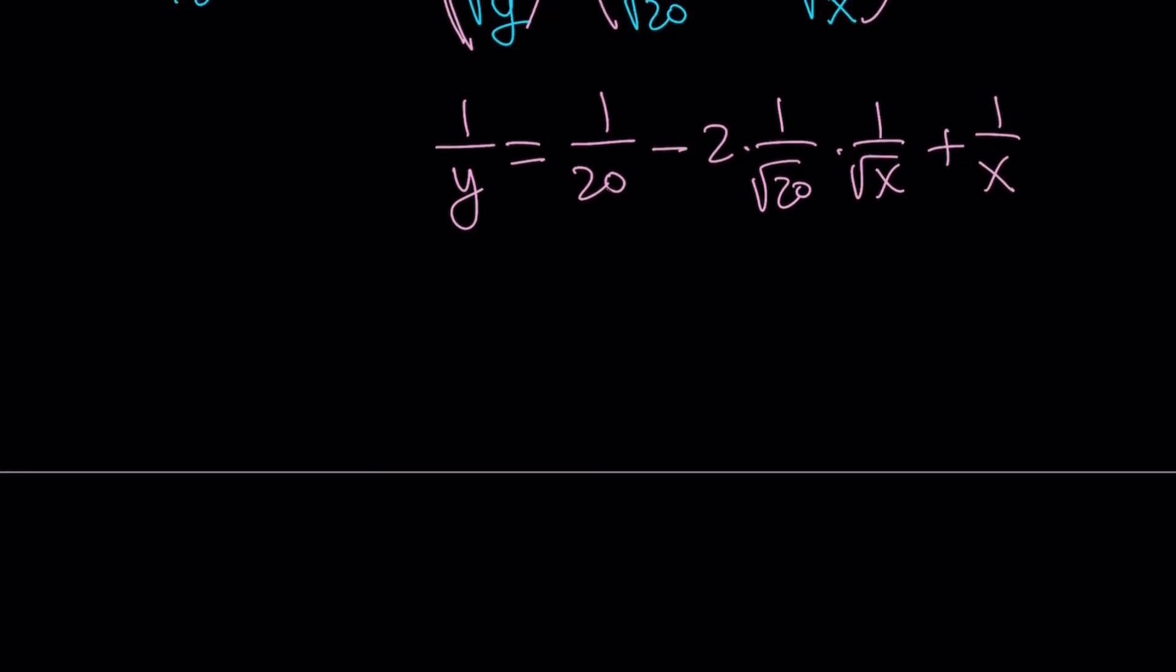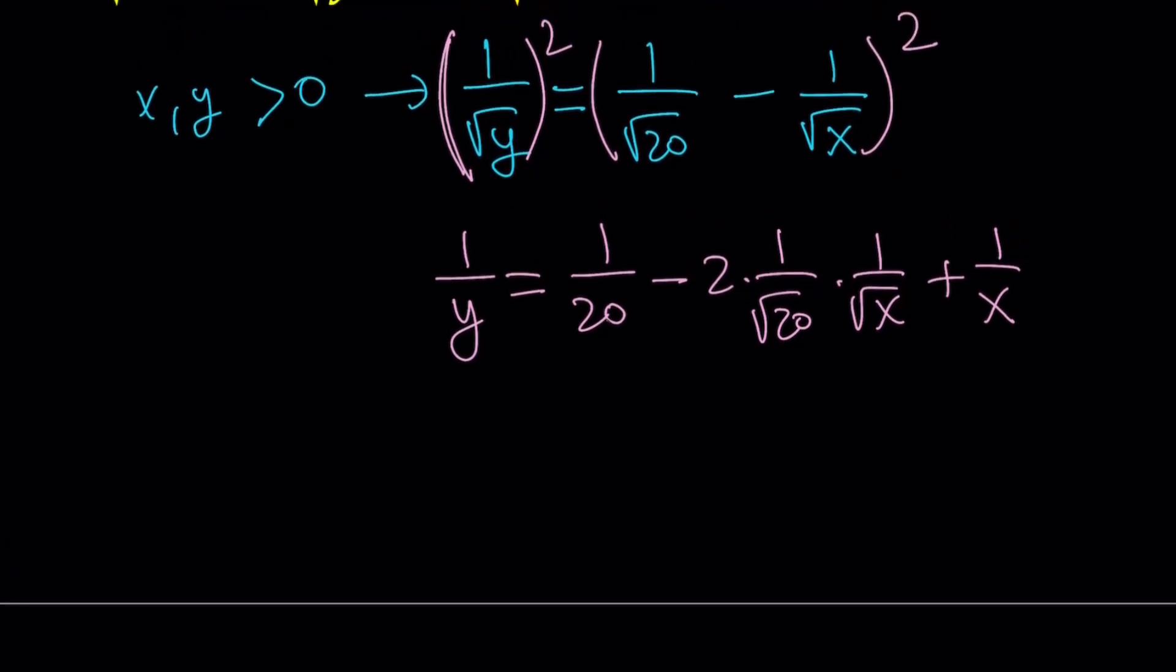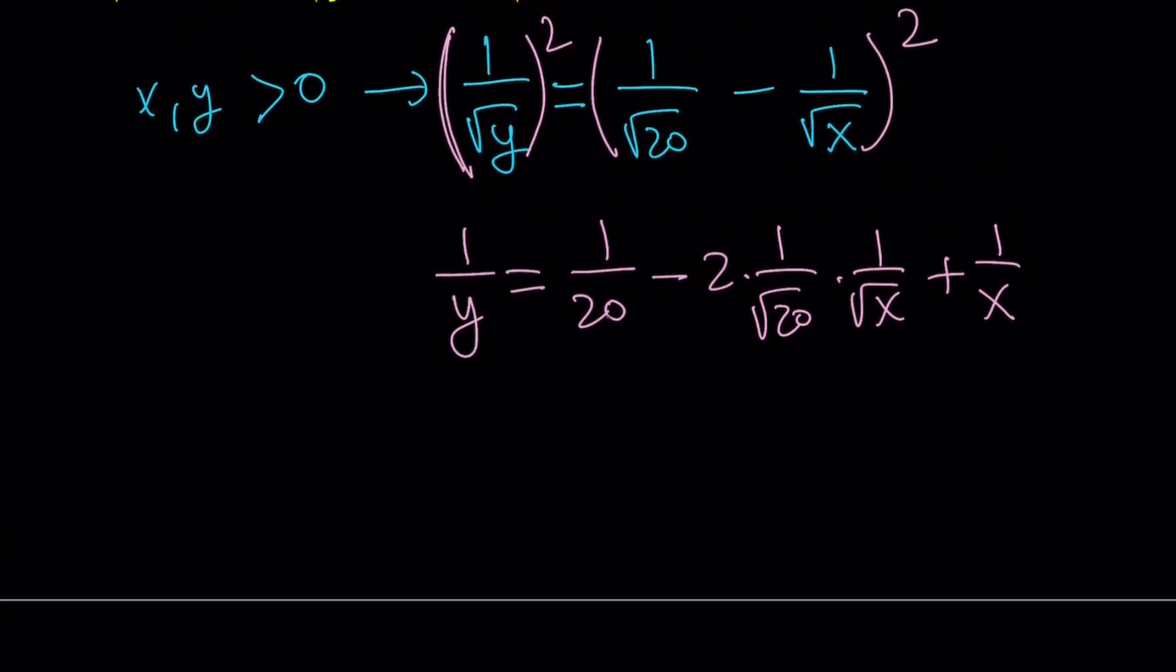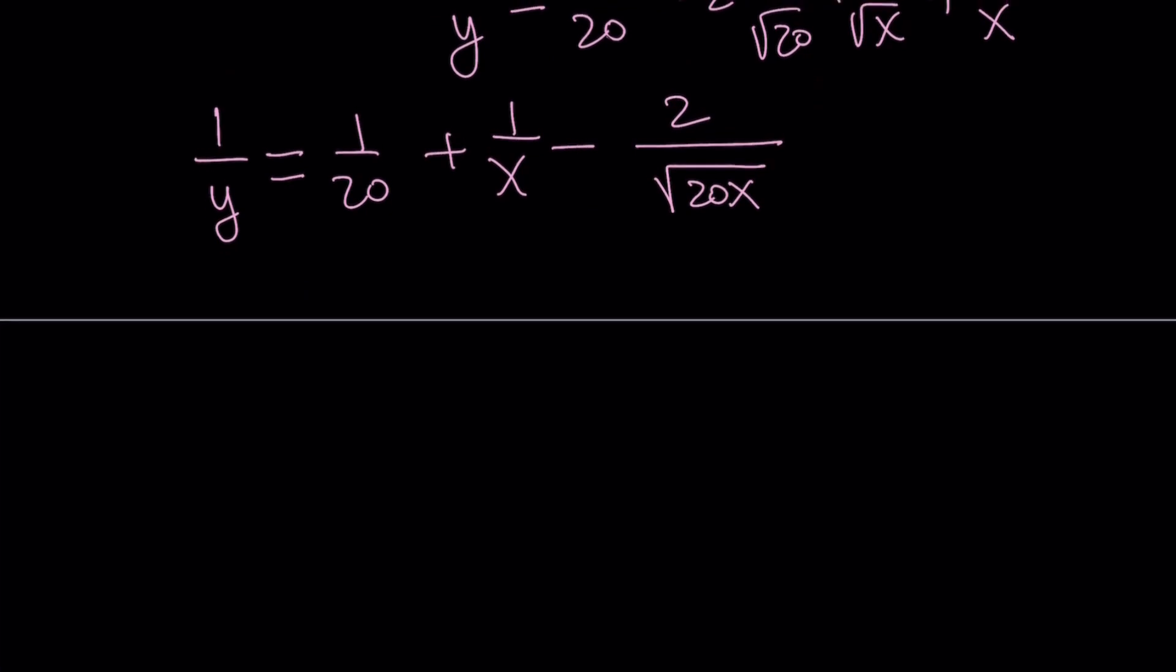Notice that pretty much everything is rational here since x and y are positive integers, and obviously they have to be different from 0. So we can just simplify this a little bit. We can write it as 1 over y equals 1 over 20 plus 1 over x minus 2 over square root of 20x.